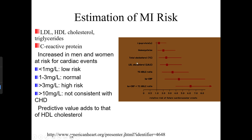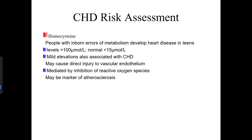C-reactive protein (CRP) levels: less than 1 mg/L is low risk; 1–3 mg/L is normal; greater than 3 mg/L is high risk; greater than 10 mg/L is not consistent with CHD. Homocysteine: individuals with inborn errors of metabolism develop heart disease in their teenage years at levels greater than 100. Less than 15 is normal. Mild elevations in homocysteine are also associated with CHD and may cause direct injury to vascular endothelium, mediated by inhibition of reactive oxygen species, potentially serving as a marker of atherosclerosis.